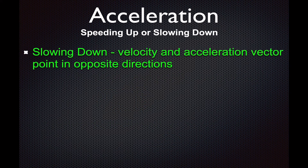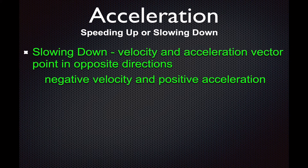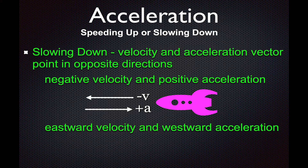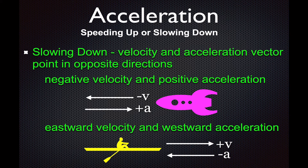If the velocity vector and the acceleration vector point in opposite directions, that means you're slowing down. For example, if the spaceship is going to the left — the negative direction — but it's accelerating to the right in the positive direction, then it is slowing down. If you were to calculate the acceleration and the object is going in the negative direction and slowing down, you should get a positive acceleration: negative velocity, slowing down, positive acceleration. Similarly, the person rowing his boat in the positive direction but slowing down will have a negative acceleration.